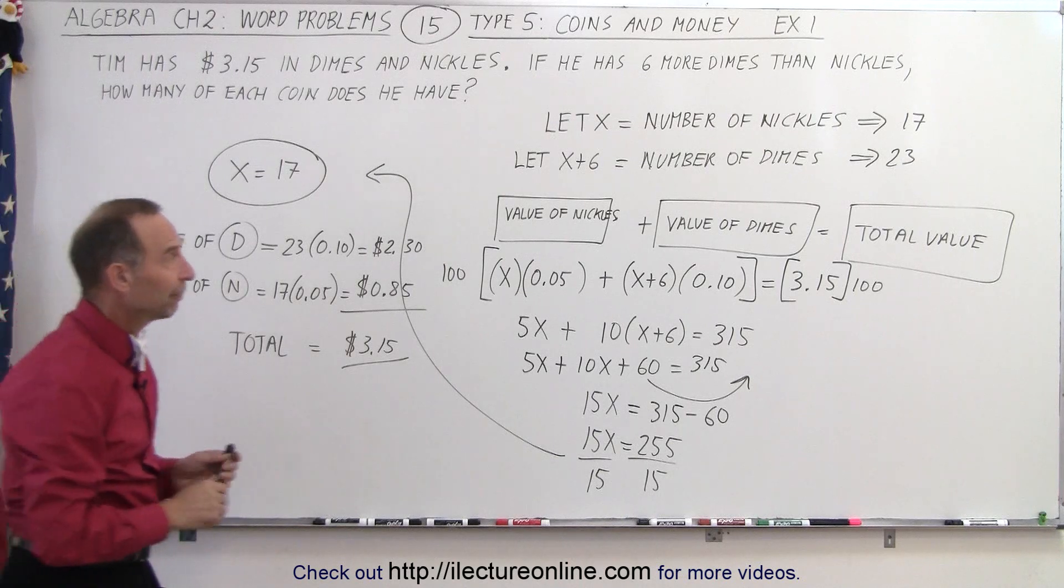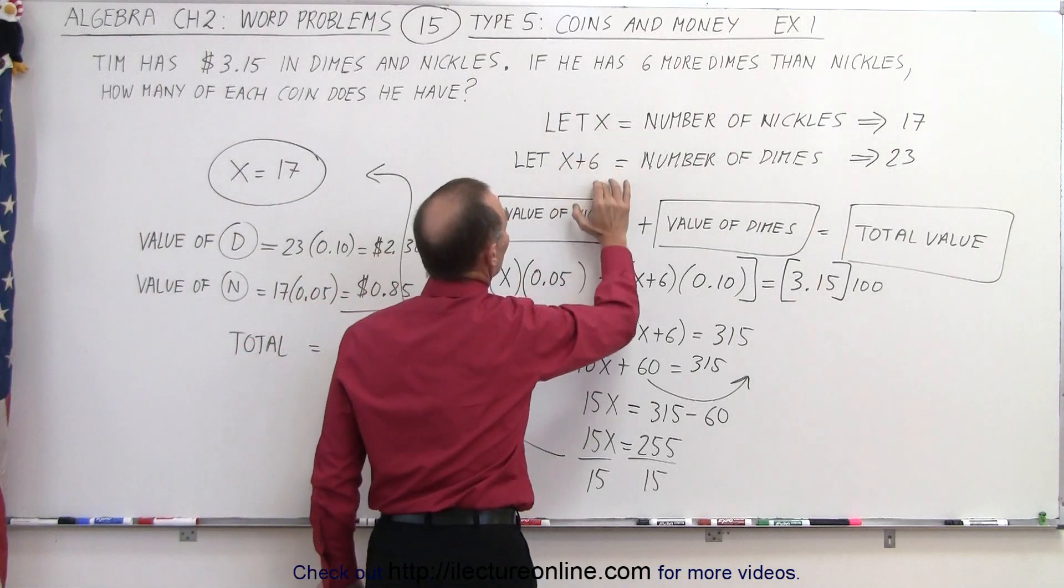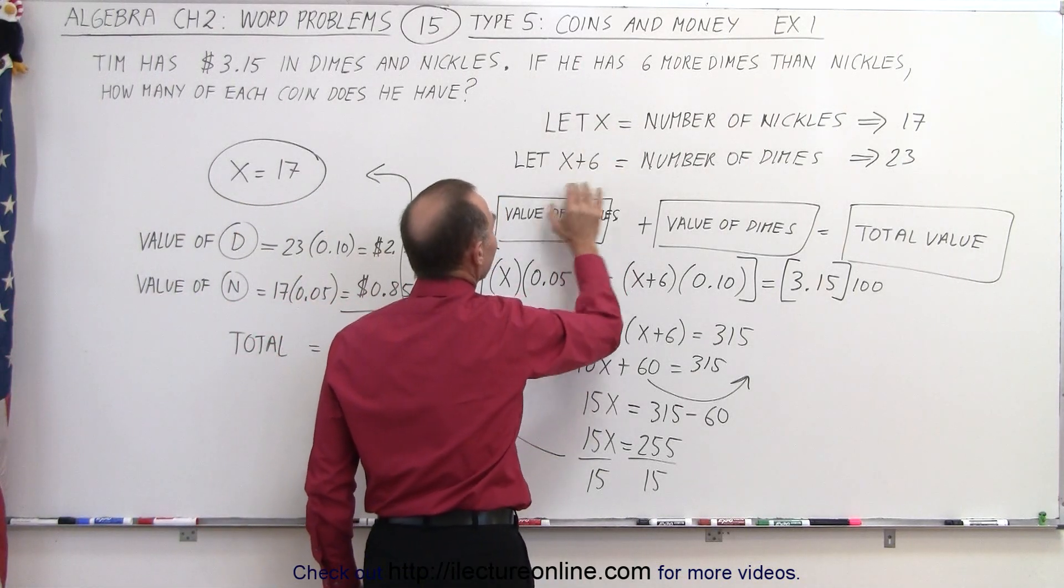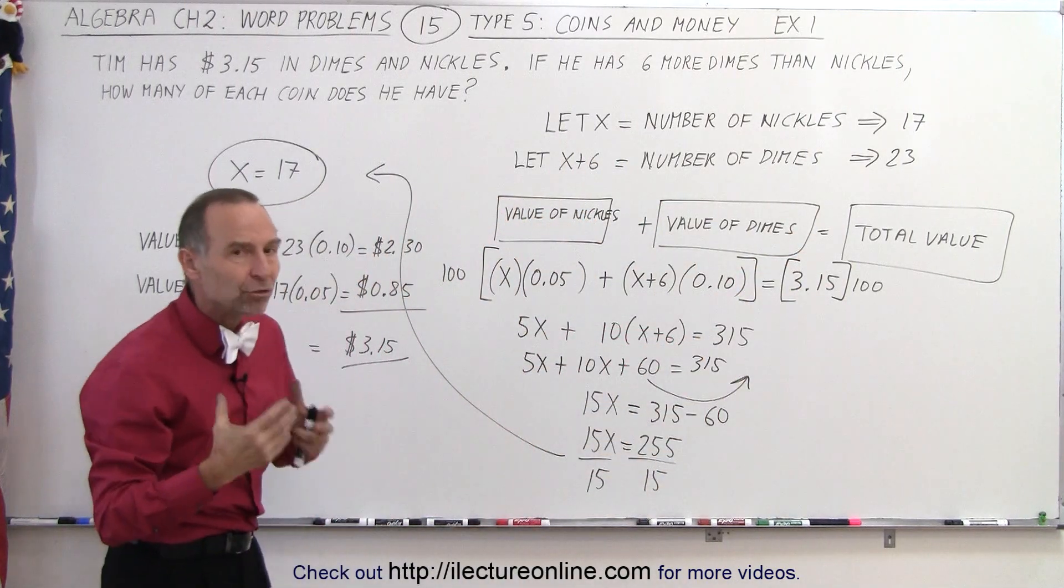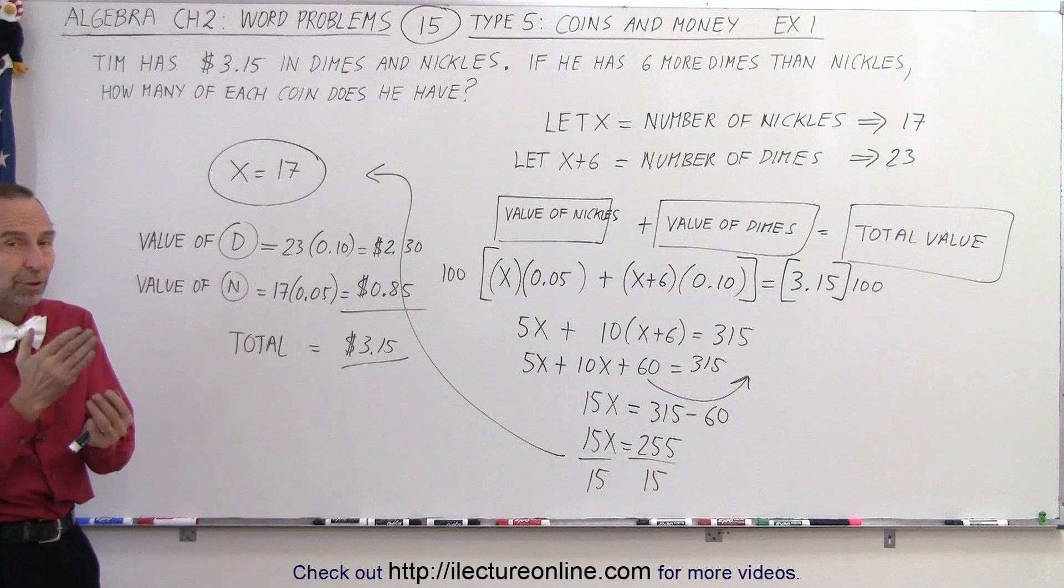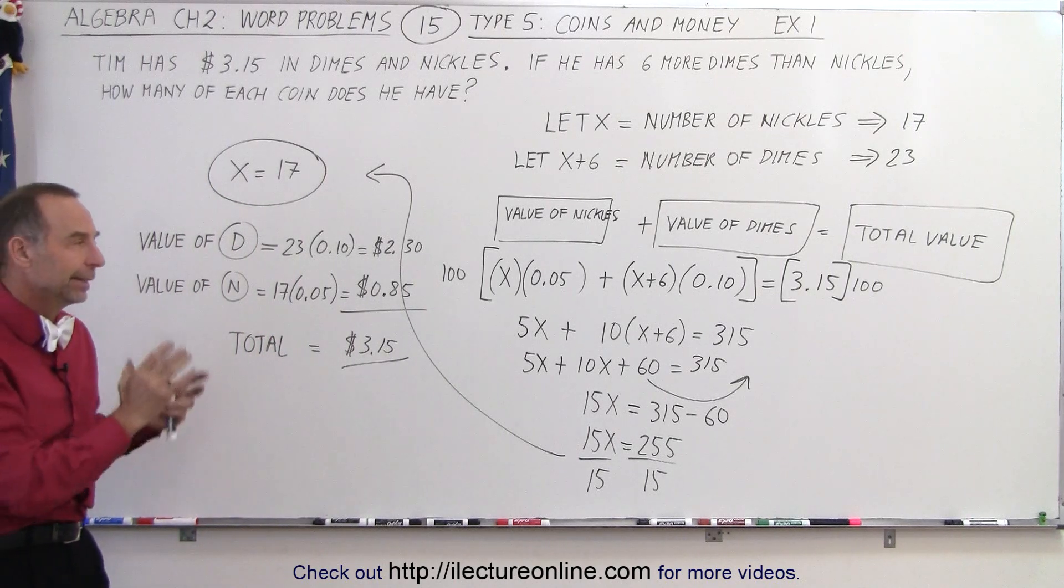But the key again is, first define the quantity of each coin in terms of x, and then set up an equation depending upon the value that each coin represents, which means you multiply the number of each coin times the value of each coin. And that is how you solve this type of problem.